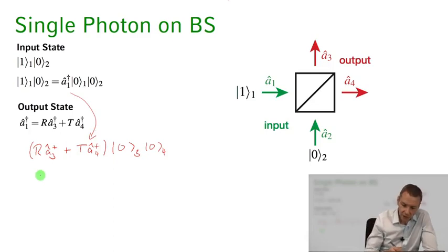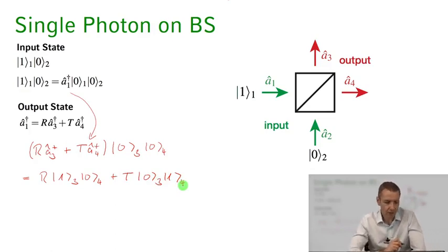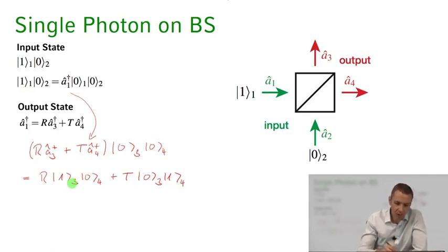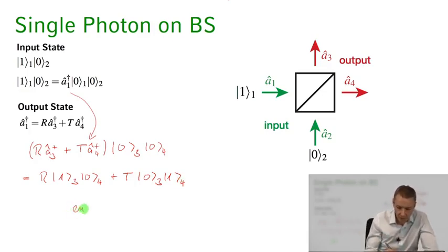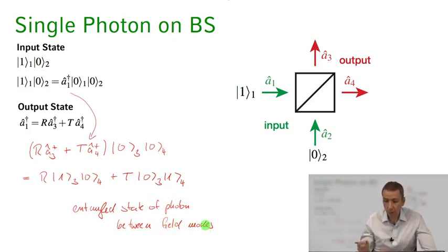This gives us r times |1⟩₃ |0⟩₄ plus t times |0⟩₃ |1⟩₄. You can see that the output state is a superposition state — the photon being in mode 3 or the photon being in mode 4. We say this is an entangled state of the photon between the different field modes.